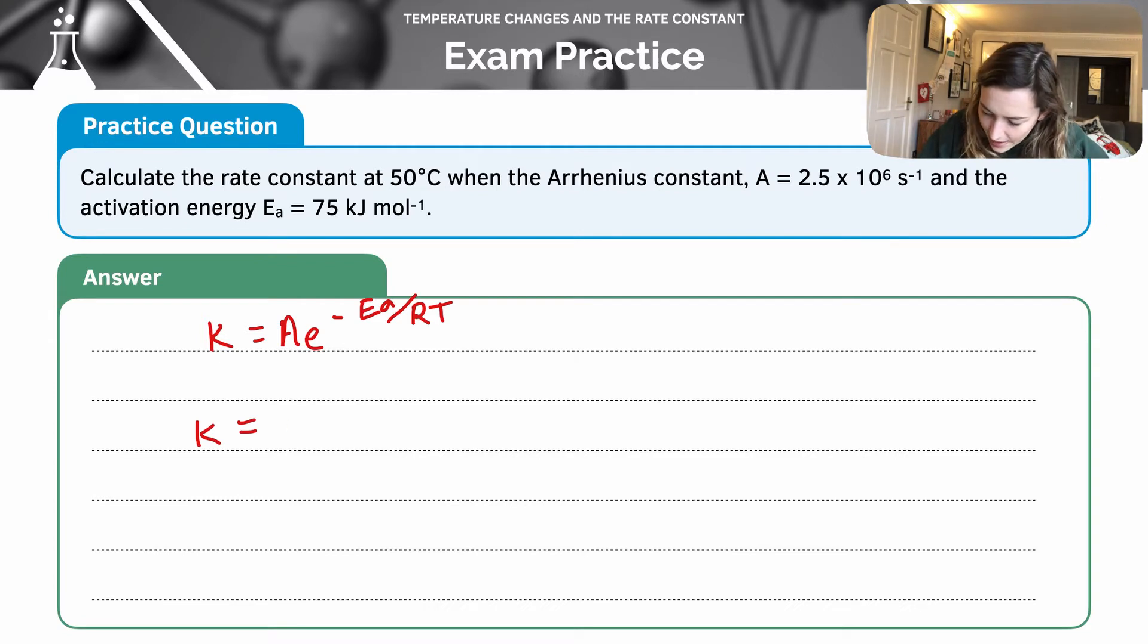So let's have a look. A is 2.5 times 10 to the -6. And then we're going to get in our calculator and put e to the minus 75. But I've got it in kilojoules per mole. So I need to convert that into joules. So I'm going to times that by 1000.